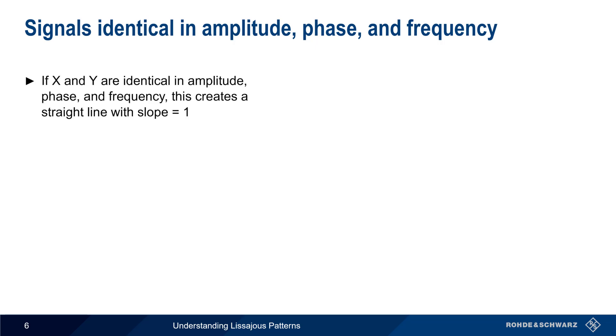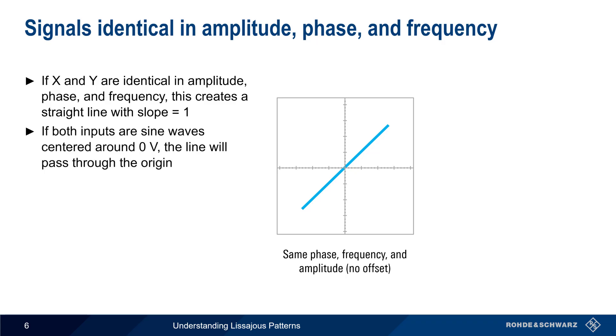If both the X and Y channels are identical in amplitude, phase, and frequency, and assuming the same volts per division setting on each channel, the resulting Lissajous pattern is simply a straight line with a slope equal to 1. If both inputs are sine or other repeating waveforms centered around 0 volts, then this line will also pass through the origin.